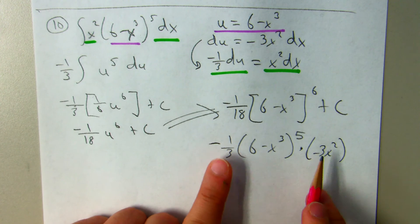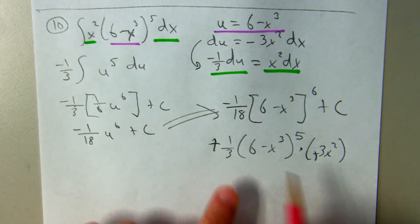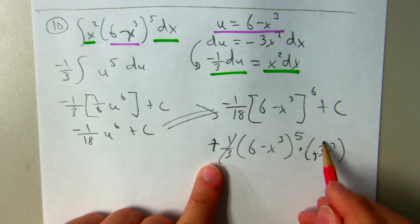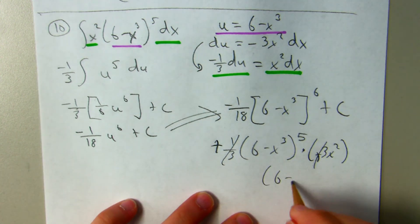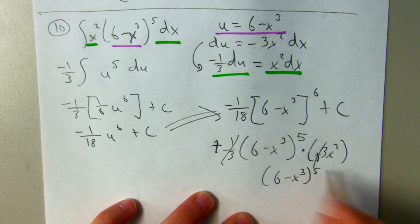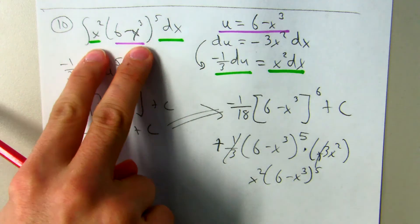And now, negative times a negative, that's going to be positive. 3 times 1/3, that's going to be 1. And I'm left with (6 - x³)⁵ times x squared, which is that.